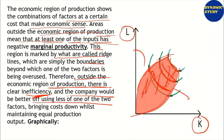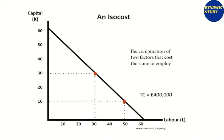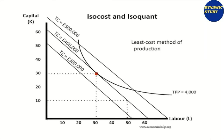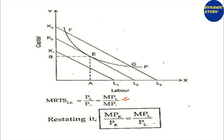The company would be better off using less of one of the two factors, bringing the cost down while maintaining equal production. The graph makes this clear. These ridge lines set the boundaries, and outside them at least one input's marginal productivity is negative. Isocost is similar to the budget line — it is a combination of two factors. The isocost-isoquant equilibrium, just like the indifference curve equilibrium, gives the least cost method of production: the slope of the isocost line equals the slope of the isoquant. That is the equilibrium point.